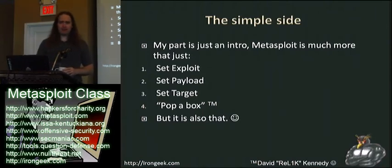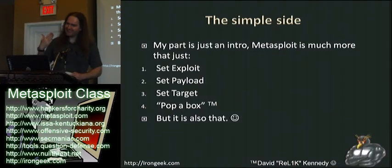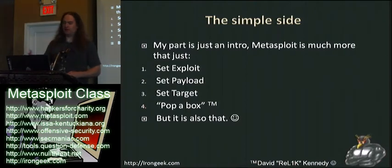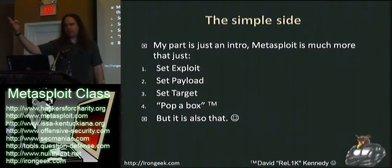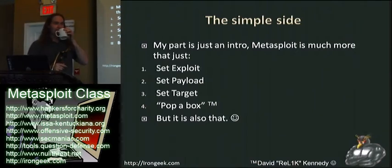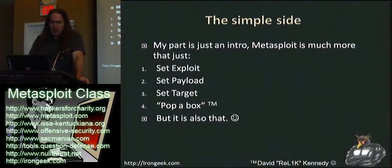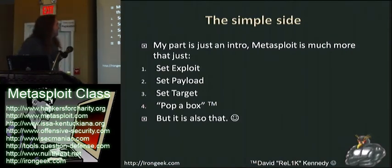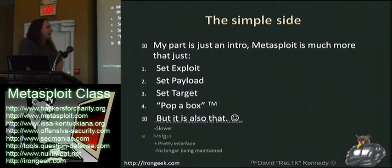There's a lot of things you can do with Metasploit, so this is a very brief overview. This is the general flowchart, if you will. You set an exploit, you set a payload, you set a target and the associated options, then you pop a box. There are all sorts of other things you can do with Metasploit, but this is the common workflow when you just want to throw an exploit at a box and see what sticks.